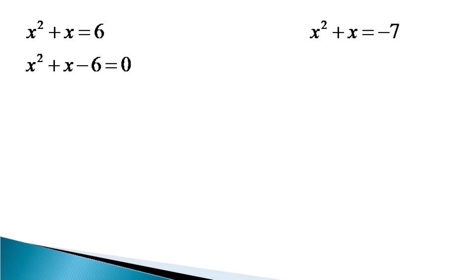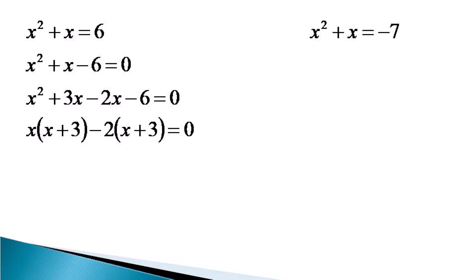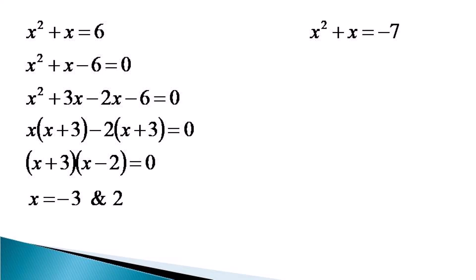The equation becomes x squared plus x minus 6 equals 0 after taking 6 on the left hand side. We find two factors of minus 6 whose sum is equal to plus 1 — those are plus 3 and minus 2. The equivalent equation is x squared plus 3x minus 2x minus 6. Taking common x from the first two terms and minus 2 from the last two terms gives x plus 3 into x minus 2 equals 0, giving us two roots: x equals minus 3 and x equals 2.